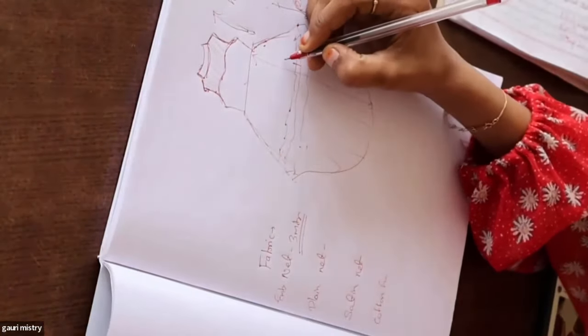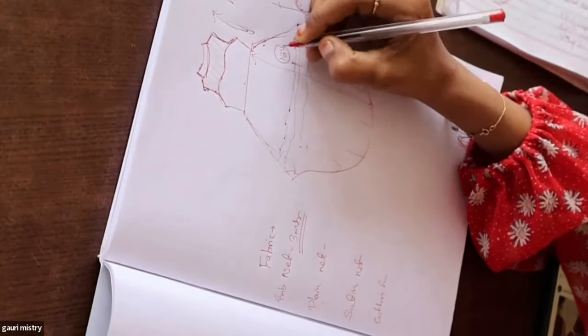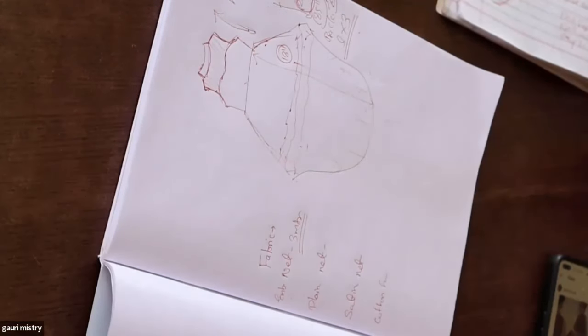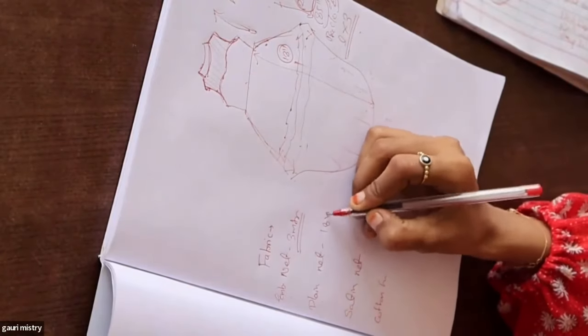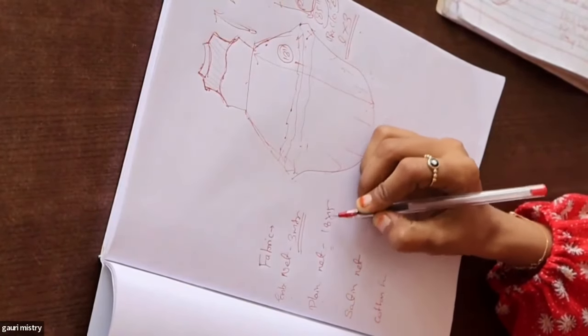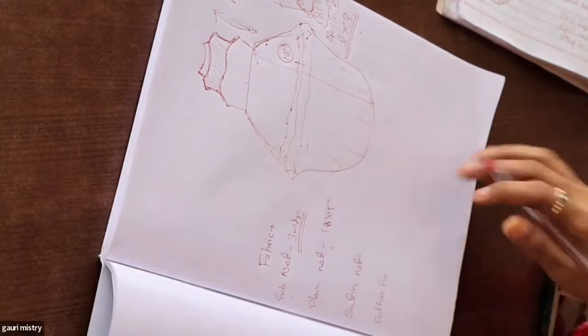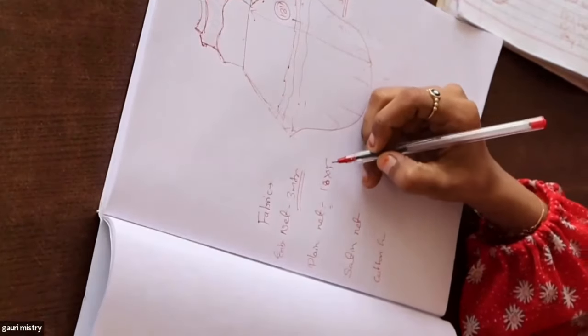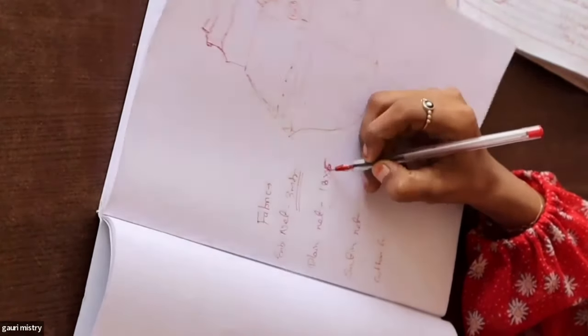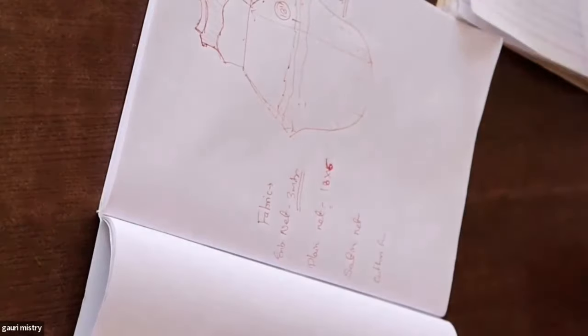We will put the net length at 18. So 18 into 5. We will cut 5 to 6, so we will cut the net length at 18 into 6.